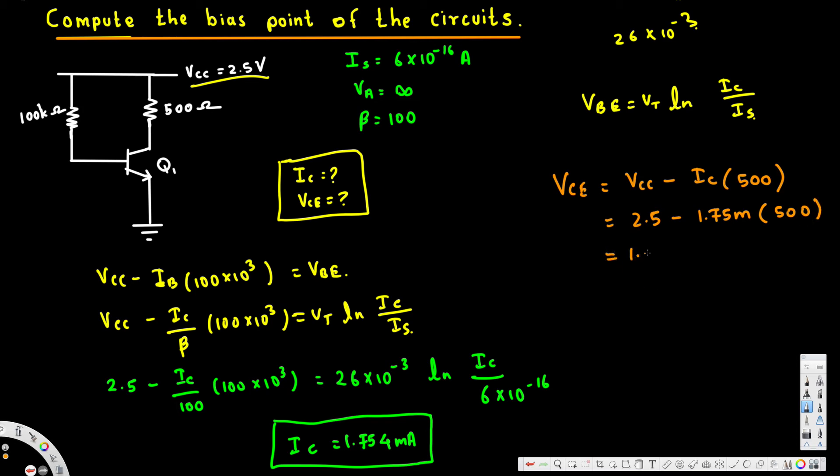And if you calculate this one you will end up with 1.623 volts. That is Vce and that's it. That's how we do this kind of problem.